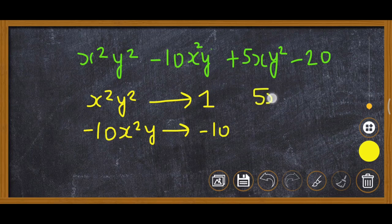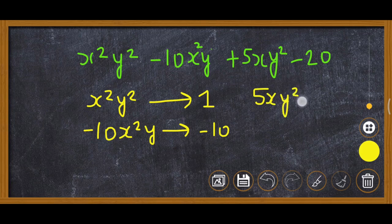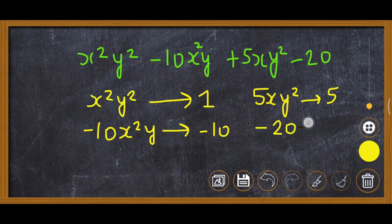Next, 5xy². The coefficient will be 5. And finally, -20. The coefficient will be -20 itself.